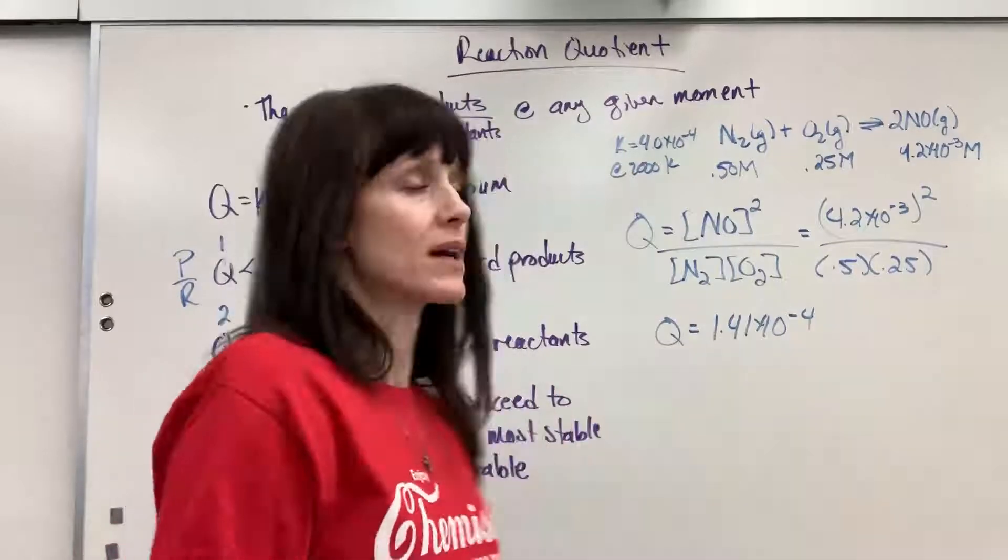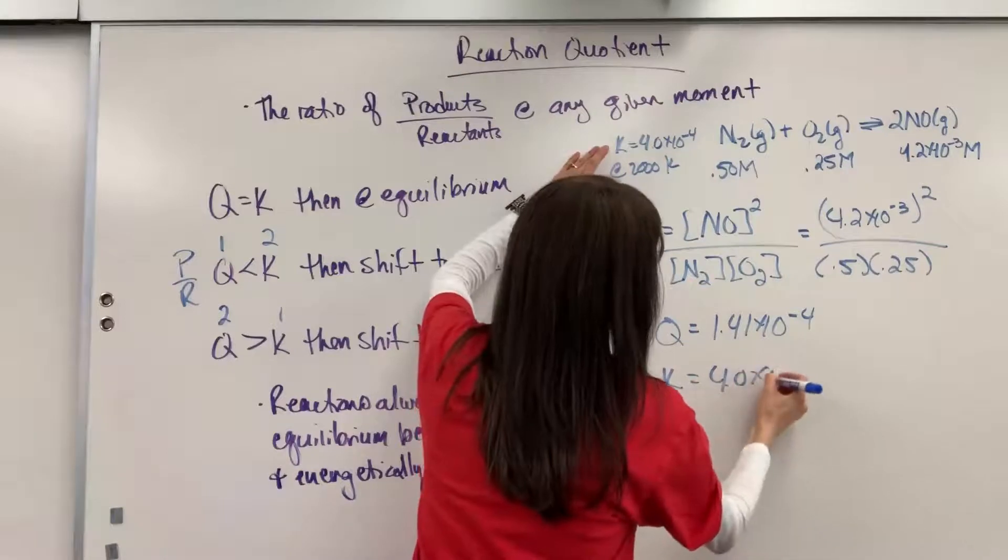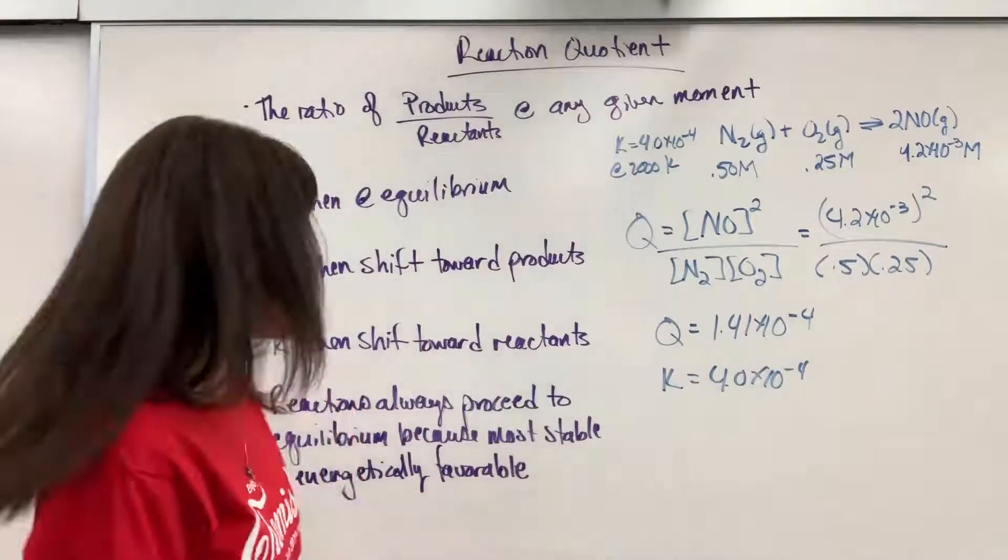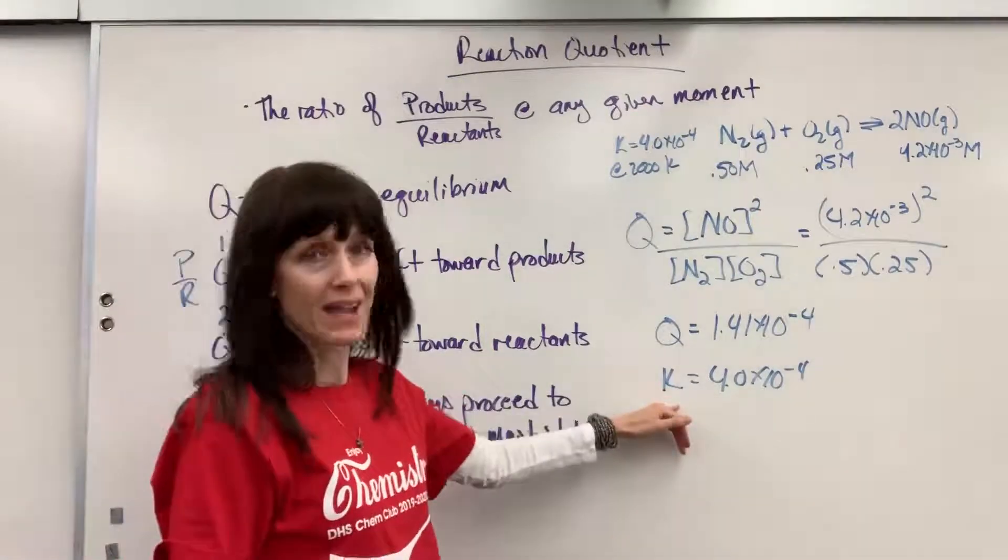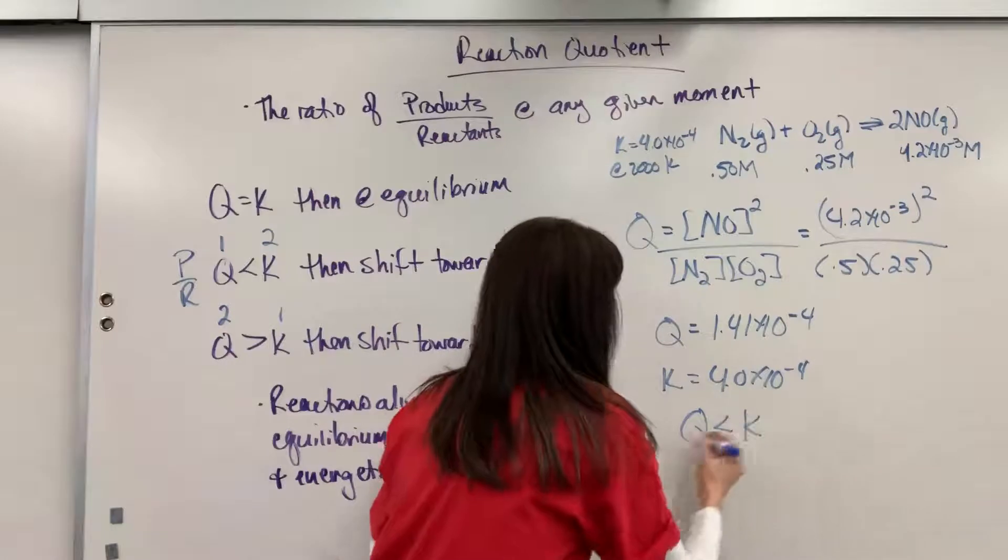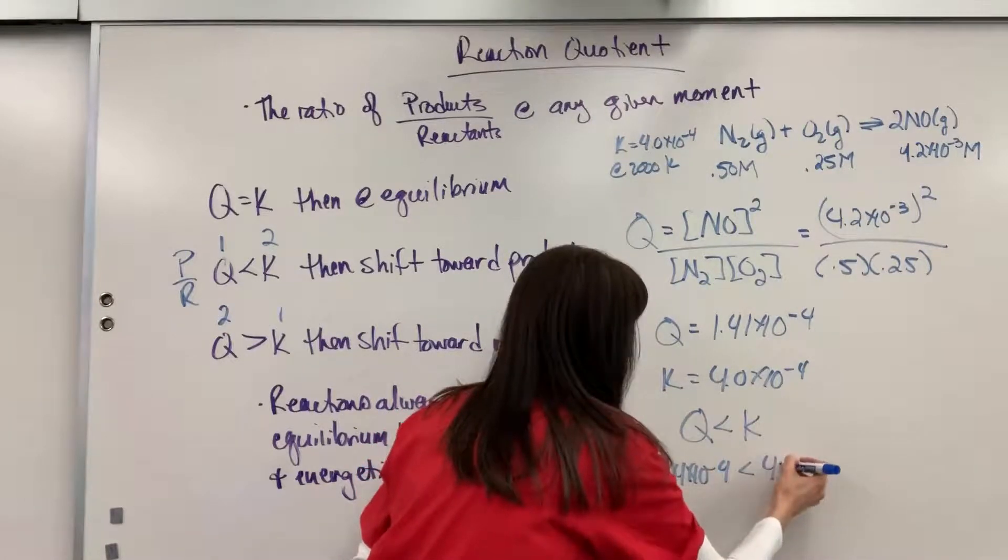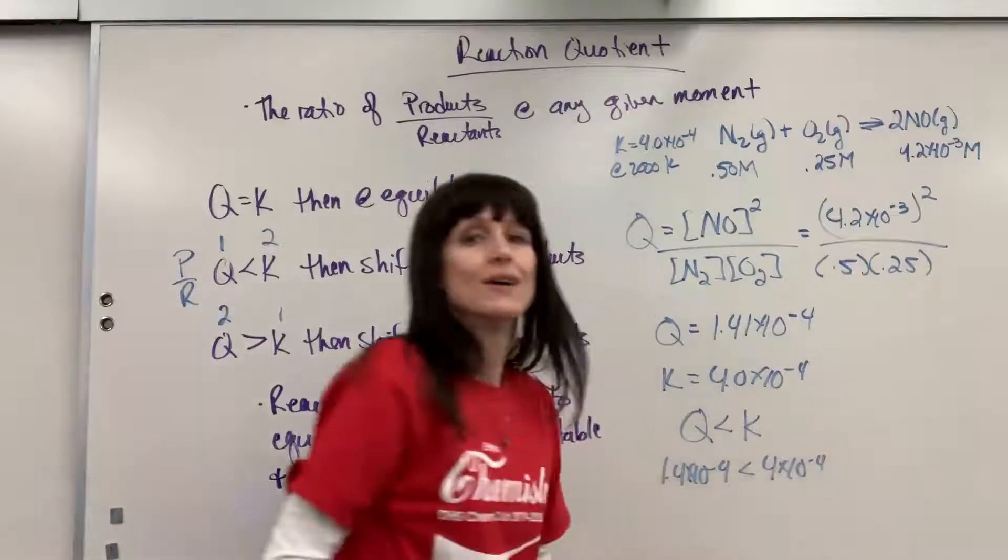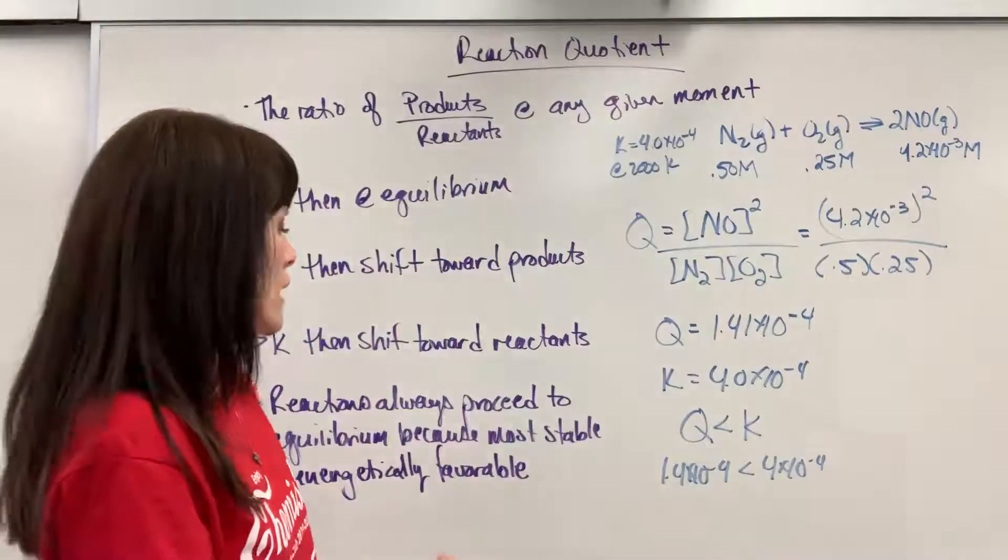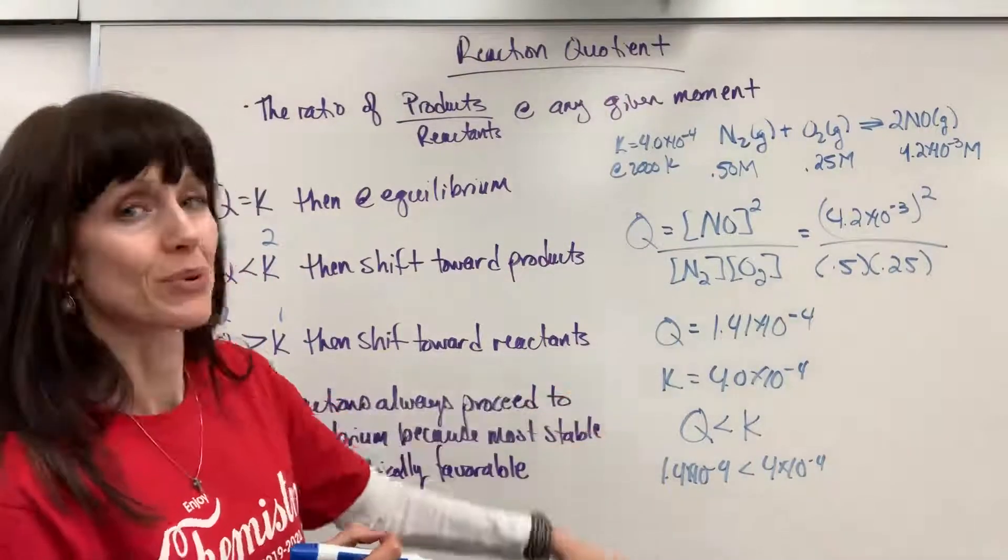Now comes the comparison. I look at my K, 4 times 10 to the minus 4. And I look at my Q. And I say, which one's bigger? The K is bigger. So Q is less than K. 1.4 times 10 to the minus 4 is less than 4 times 10 to the minus 4. So which way will this proceed to reach equilibrium?